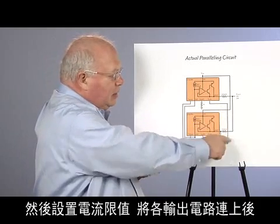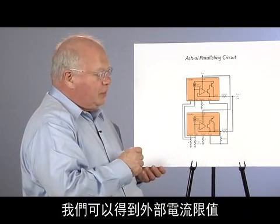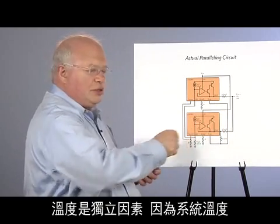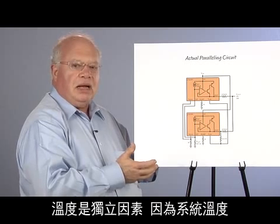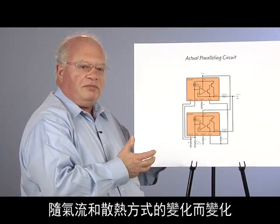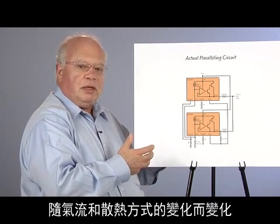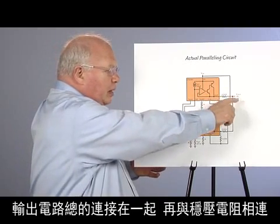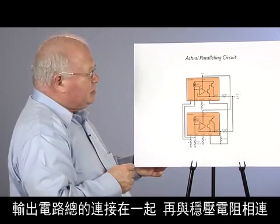We set our current limits. We tie those together so that we can have an external current limit. We look at the temperatures independently because, in a system, depending on the air flow and the way that they're heat sunk, you will have a different temperature. And we tie the outputs together through a ballast resistor.